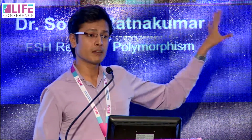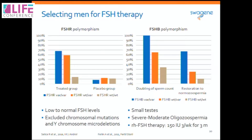Looking at the graphical data: 70 percent of men with FSH receptor variation responded very well to FSH therapy, whereas only 10 percent of men without the genetic variation responded — comparable to the placebo group — suggesting you might not even give these men FSH therapy. For the FSH beta subunit, the results were even more dramatic: 100 percent of men had a doubling of sperm count, and two-thirds achieved restoration to normal zoospermia, with cases of spontaneous reproduction after FSH therapy. Both studies used a protocol of 150 international units three times per week for three months.